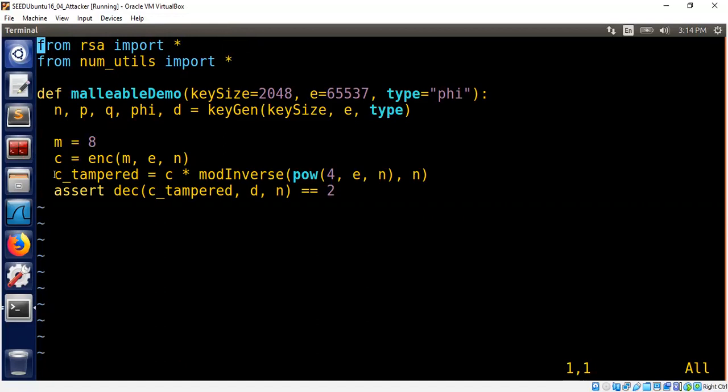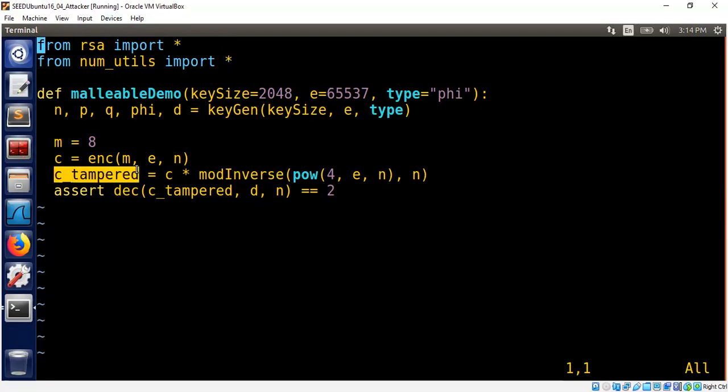So I am tampering as an attacker by taking the ciphertext and multiplying it with 4 power e mod inverse. Remember division means mod inverse. That's basically what I'm doing here. And I submit the modified ciphertext to the decryptor.